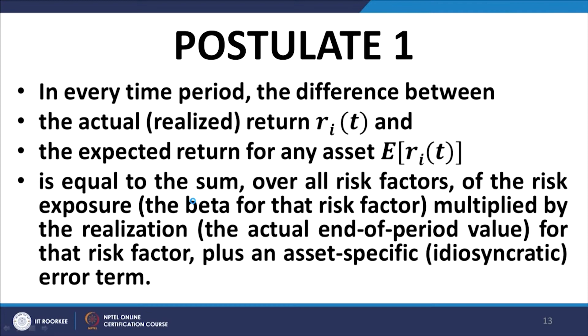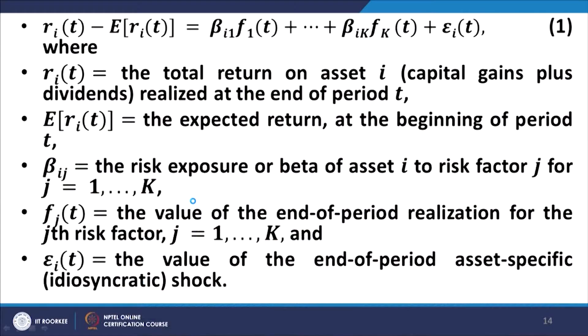So the difference between actual return and expected return is represented by the sum of the product of the various risk factor betas multiplied by the realizations of those risk factors at the end of the period, plus a random error term representing the unsystematic or idiosyncratic risk. This is equation number 1.